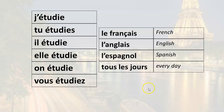Let's take a look at the forms of the verb étudier in the present tense with the singular subject pronouns. We have: I study / I do study / I am studying — j'étudie; you study / tu étudie; he studies — il étudie; she studies — elle étudie; we study — on étudie; and you study / you do study / you are studying — vous étudiez.